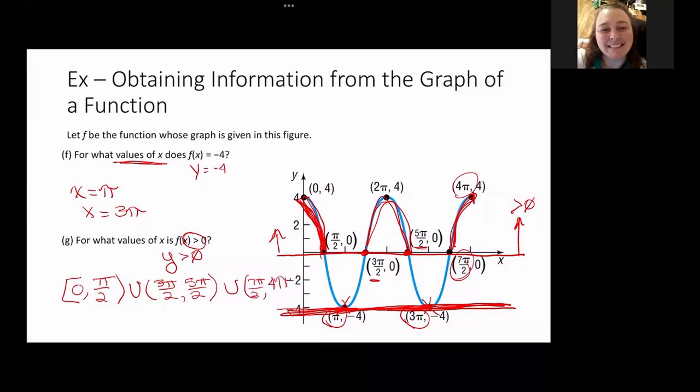Now, at 4π, we are equal to, so let's go ahead and put the square bracket. Now, if I was going to do the inequality notation, it would be 0 less than x less than π over 2 union 3π over 2 less than x less than 5π over 2 union 7π over 2 less than x less than or equal to 4π.